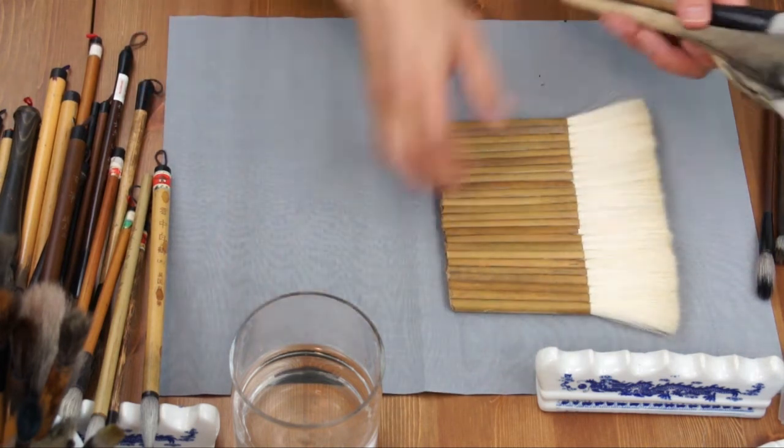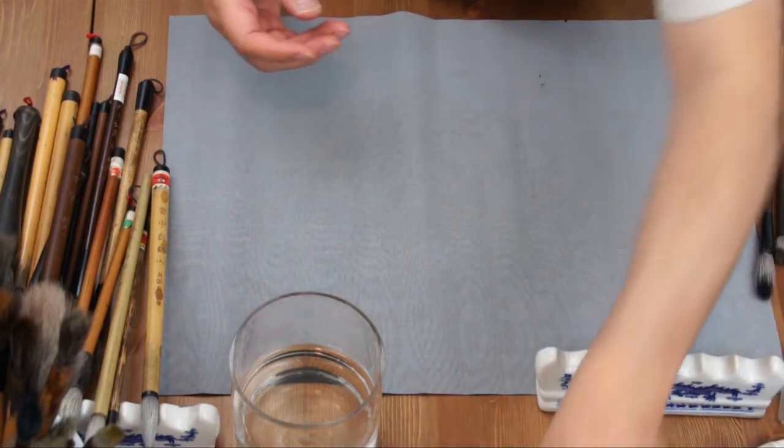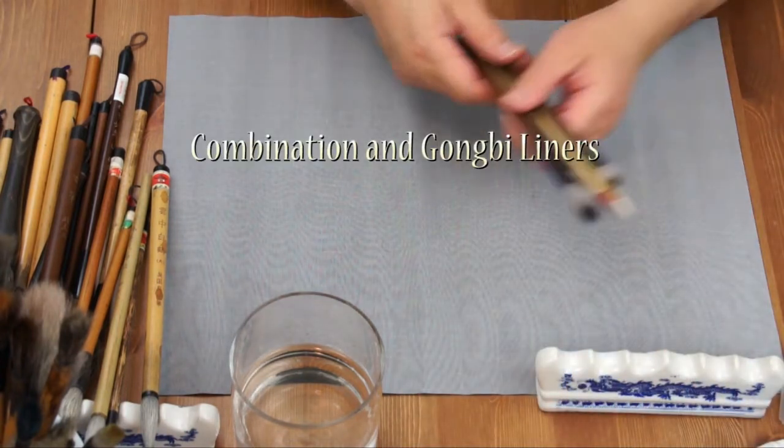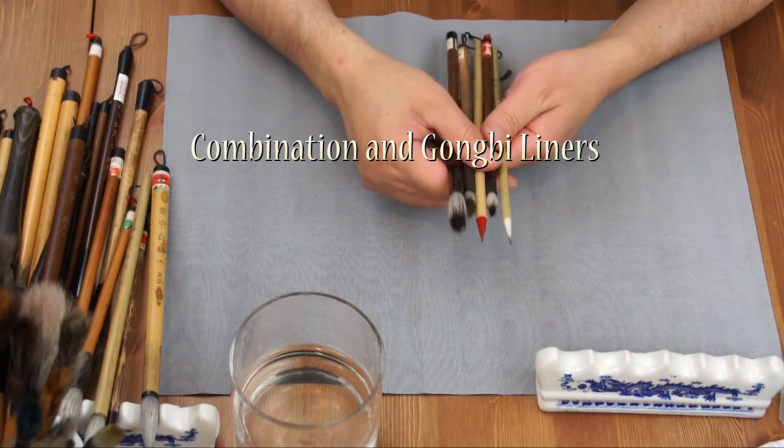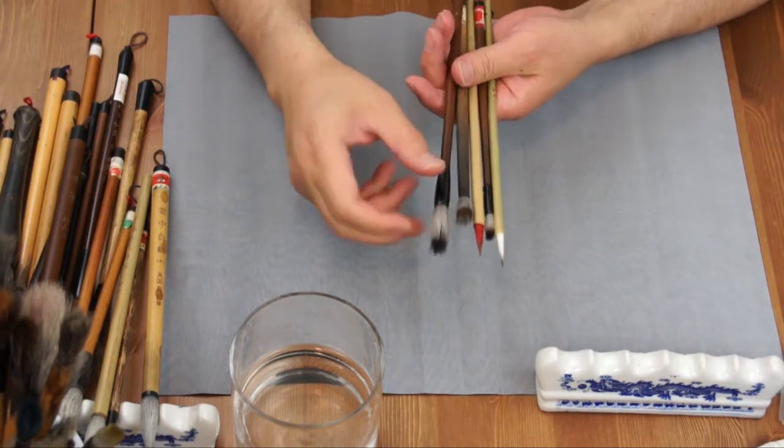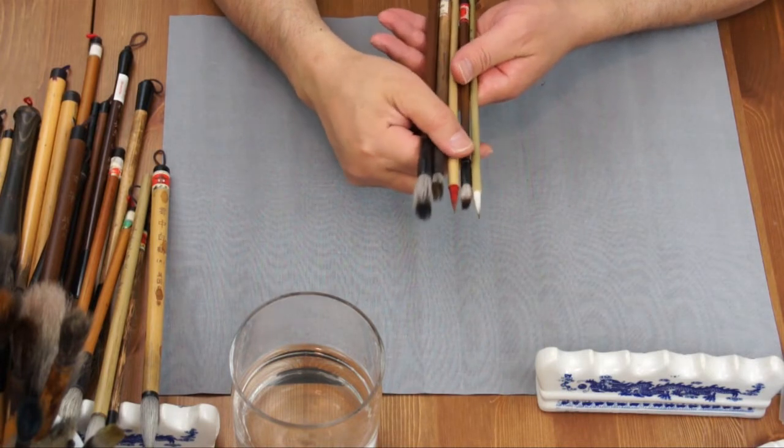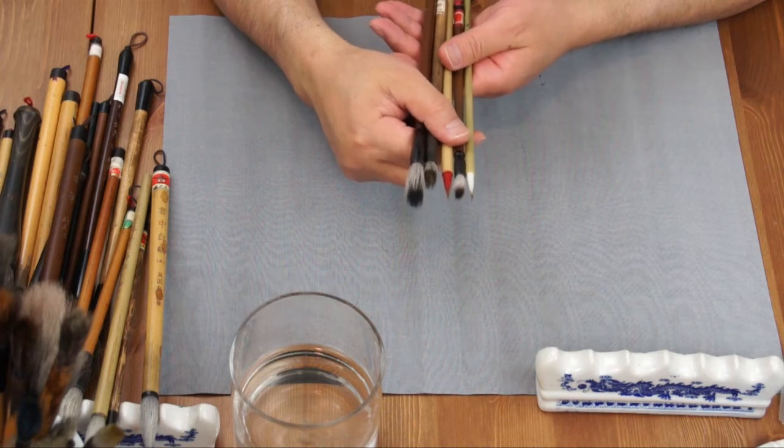Now I'd like to change to a different category or group, maybe called another kind of combination brush in terms of different lengths in addition to different hair. So you have a hard core which is longer than soft.